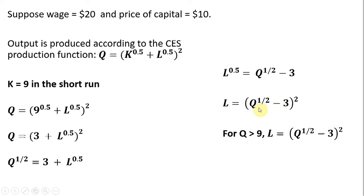Or if Q is, say, 4, then we're going to get a negative result, which doesn't make sense for labor. So for Q less than or equal to 9, L will equal 0.